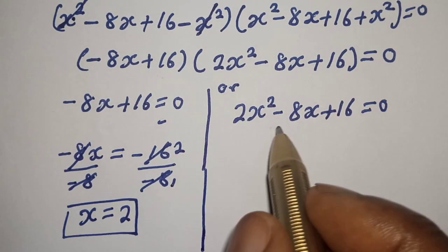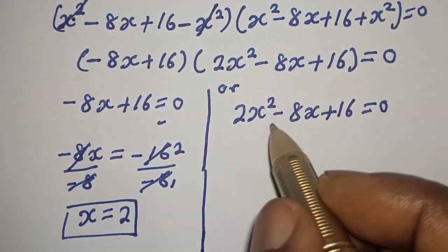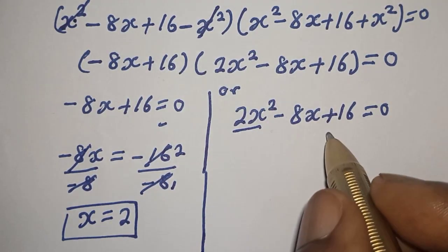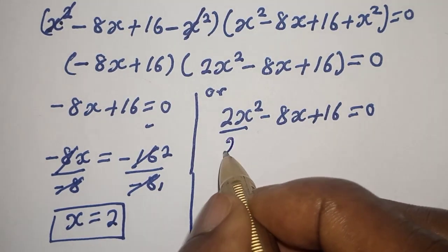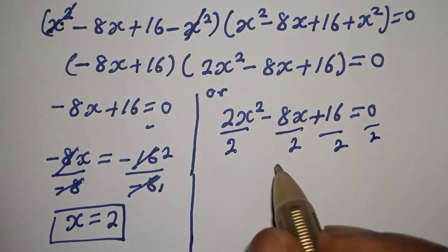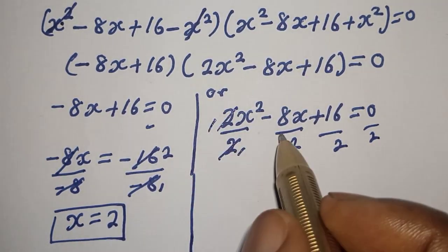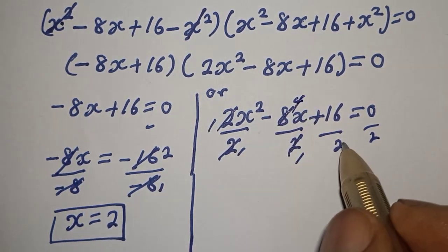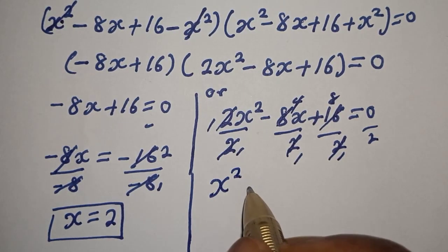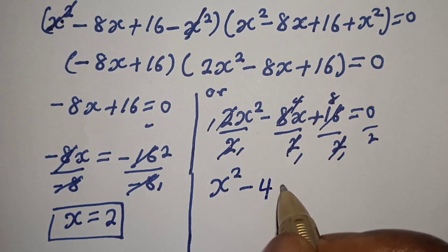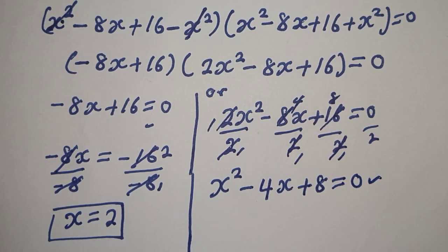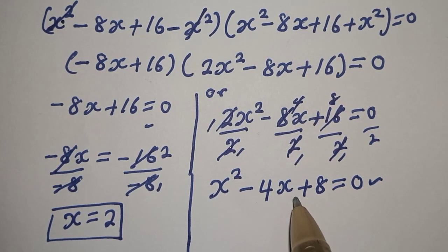From the second case, we can reduce this by dividing all through by 2. Dividing every term by 2 gives S squared minus 4S plus 8 is equal to 0. This is the quadratic equation in its reduced form.